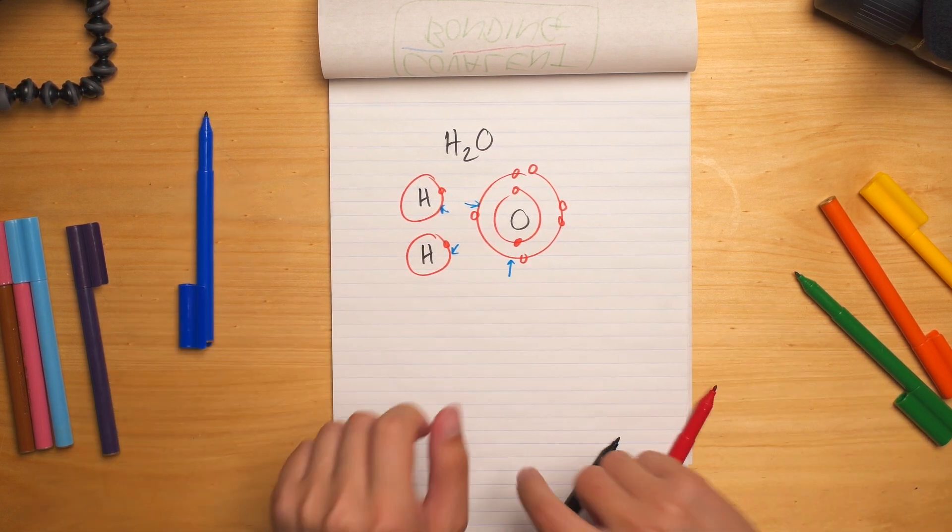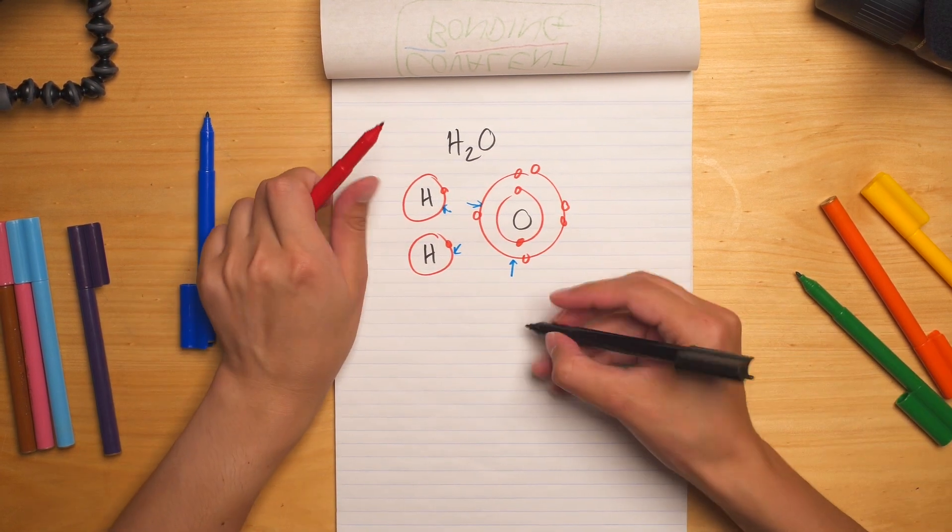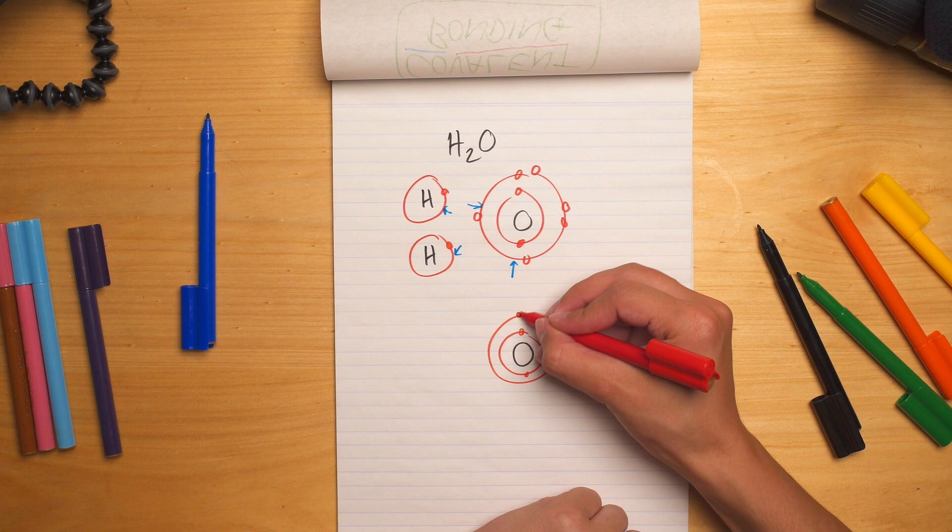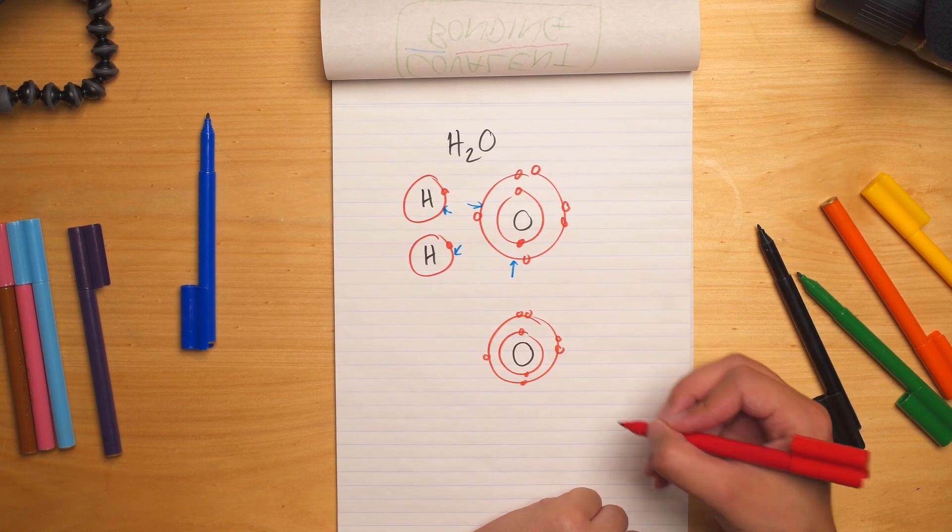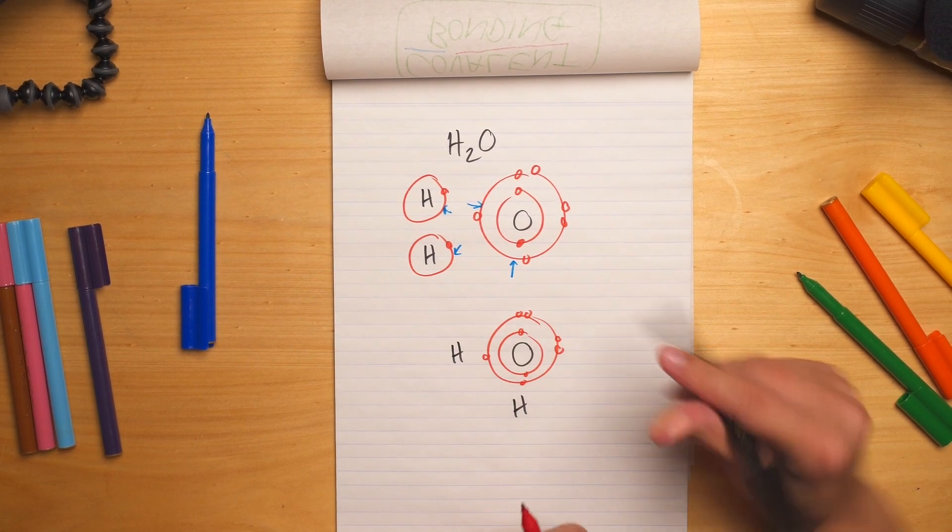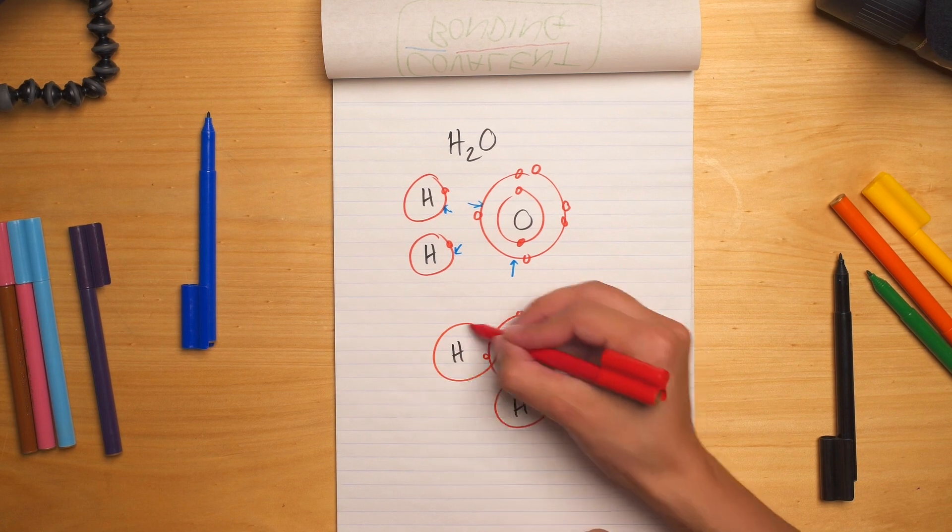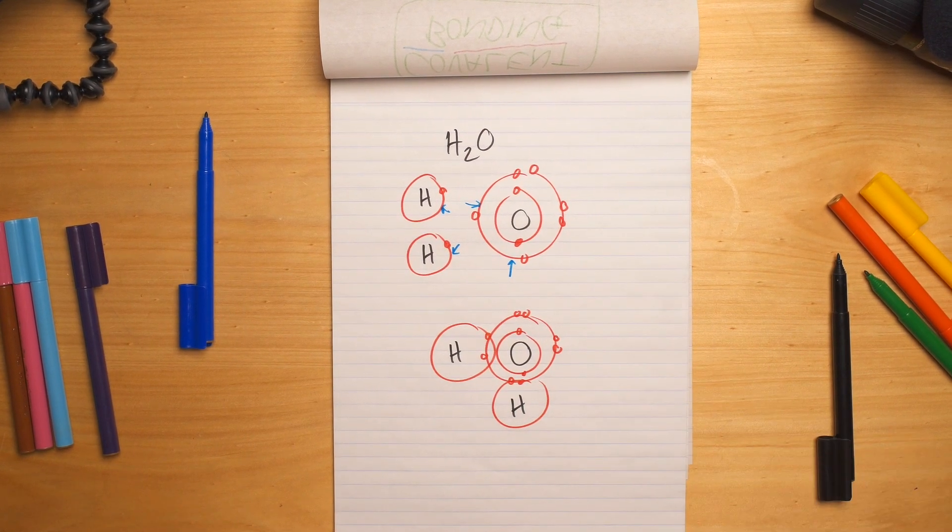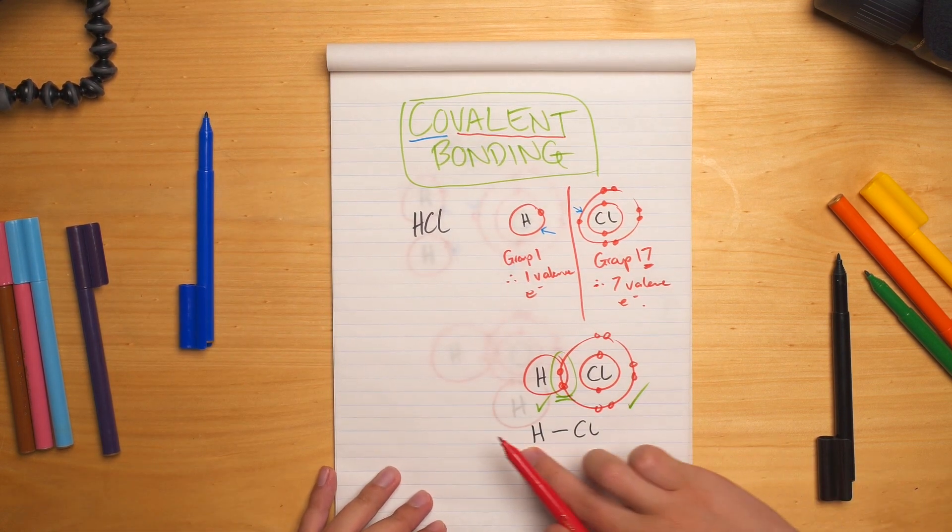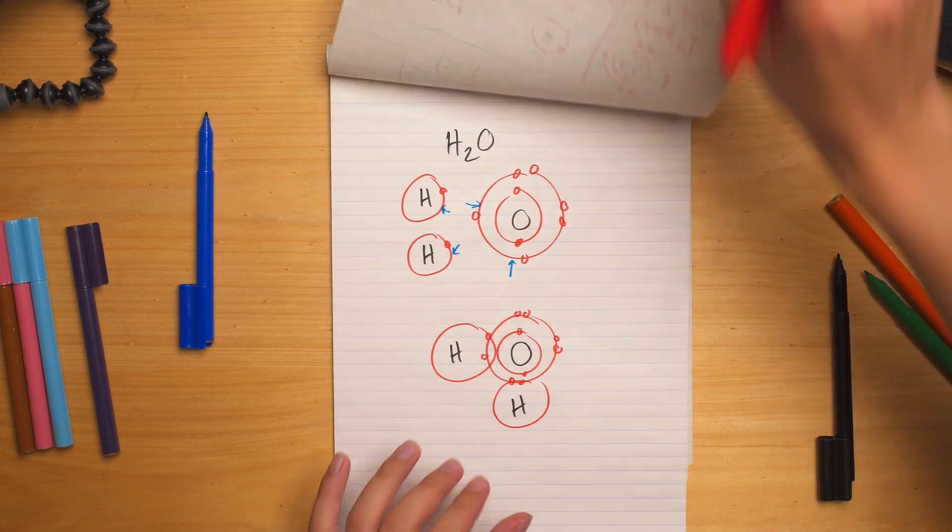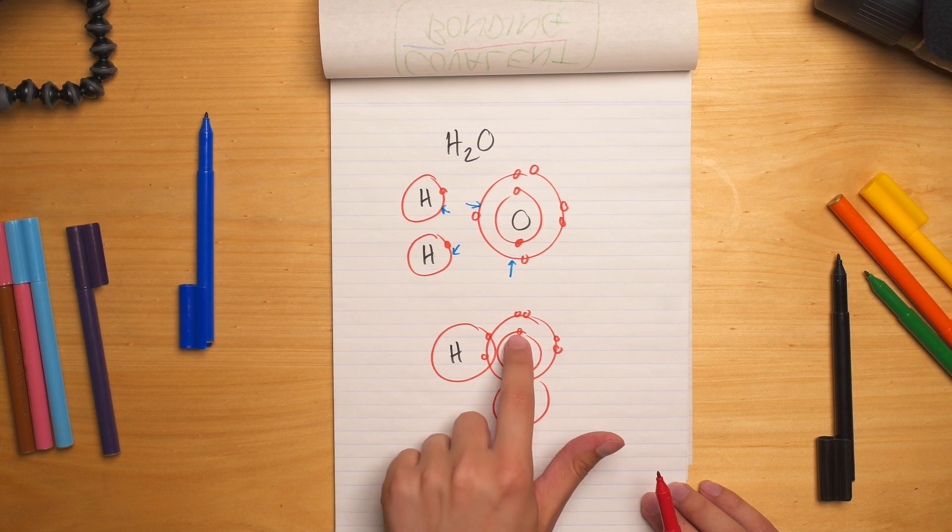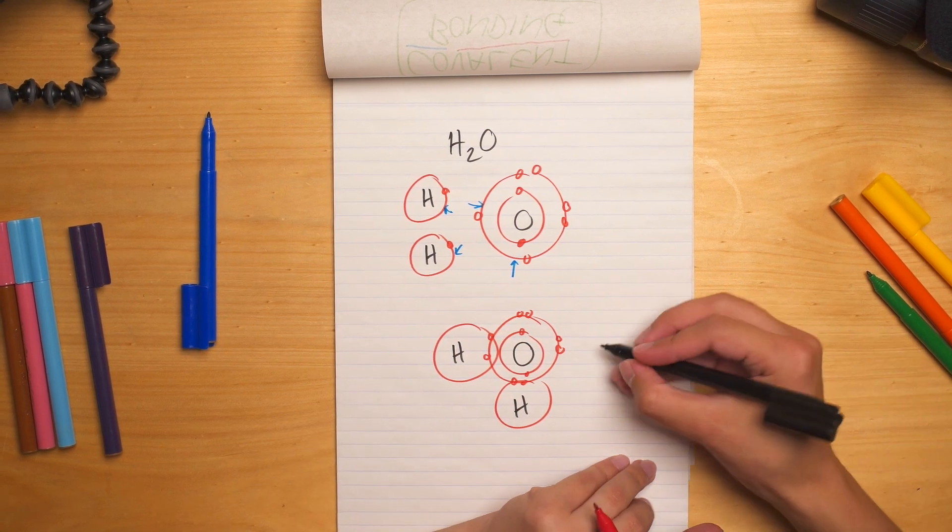So I'll draw them again, but now drawn together. So oxygen, two shells, and now I can draw my hydrogen atoms nearby. And each hydrogen atom only has one electron shell and one electron to share. And now we can take it to the next logical step, which is to form it into a structure diagram or a stick diagram, where we can see a pair of electrons between these two atoms and a pair of electrons being shared between these two atoms. That's going to take our diagram into this shape.